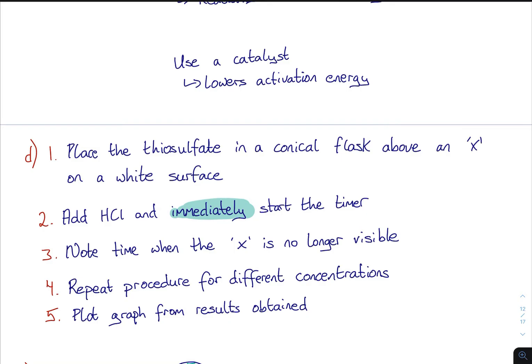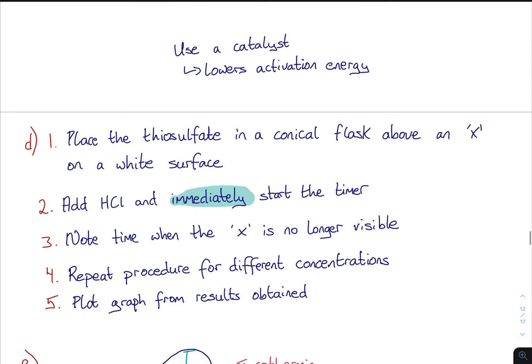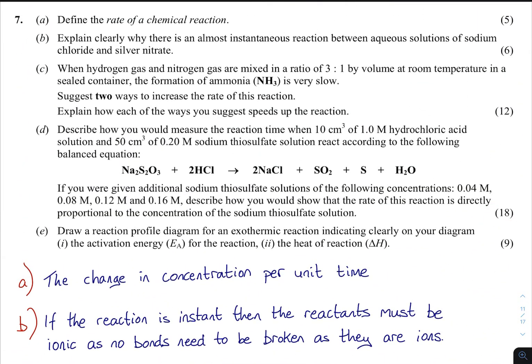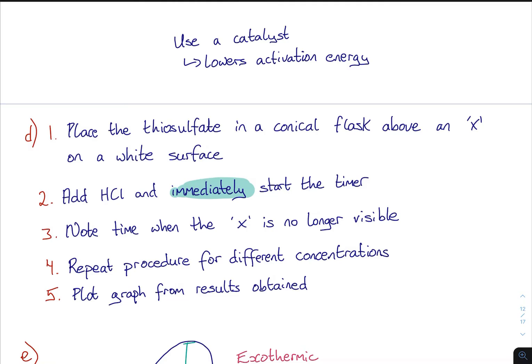You repeat the procedure for different concentrations because there were different concentrations here, and you plot a graph. Pretty much all experiments including the ones in biology and physics - you can use points four and five if you're not sure, and they often do get you the marks. So it's a tidy little one - 18 marks going for it, so you would have needed most of those points.